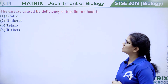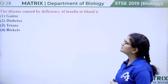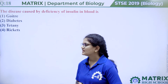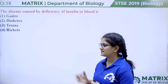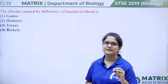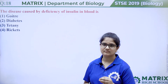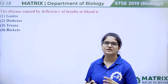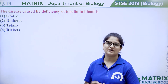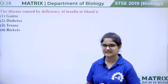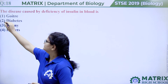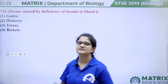Question number eighteen: the disease caused by deficiency of insulin in blood is goiter, diabetes, tetanus, or rickets. The answer is diabetes. Insulin maintains blood sugar levels. If insulin is reduced, the blood sugar level rises, causing diabetes.